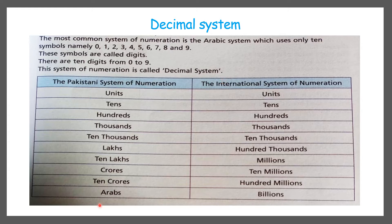This is how it is written in the Pakistani way and this is how it is written in the international way. In the Pakistani system we start from units, tens, hundreds, thousands, ten thousands, lakhs, ten lakhs, crore, ten crore, and arabs. In the international system: unit, ten, hundred, thousand, ten thousand, hundred thousand, then millions, ten millions, hundred millions, and billions.